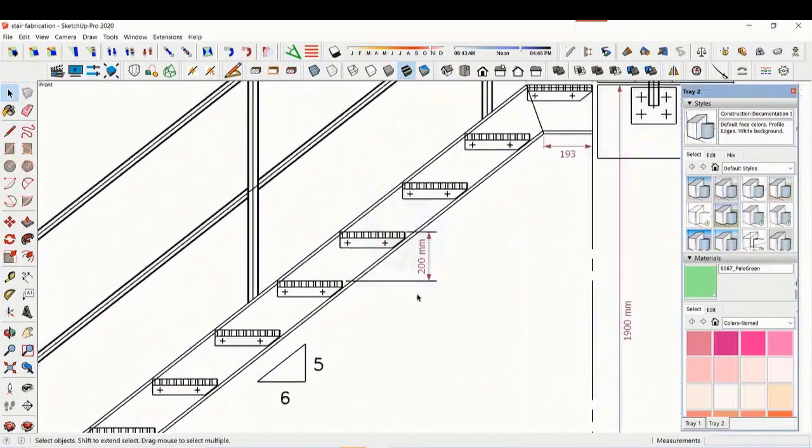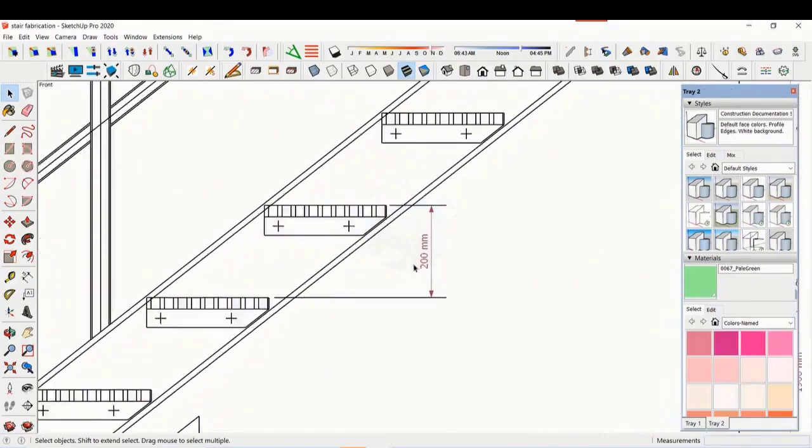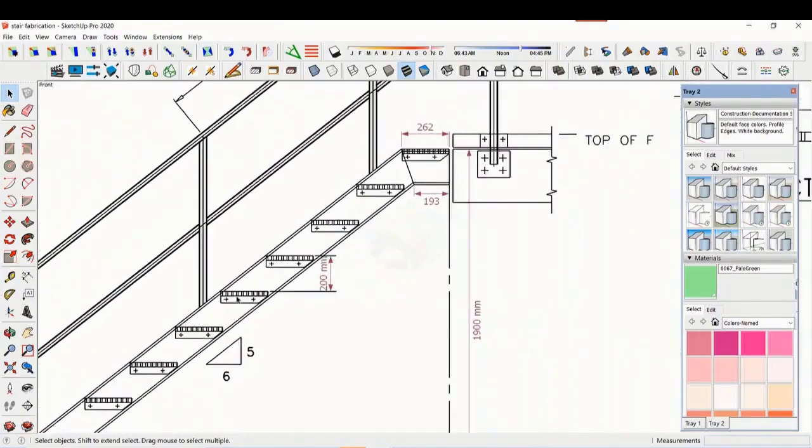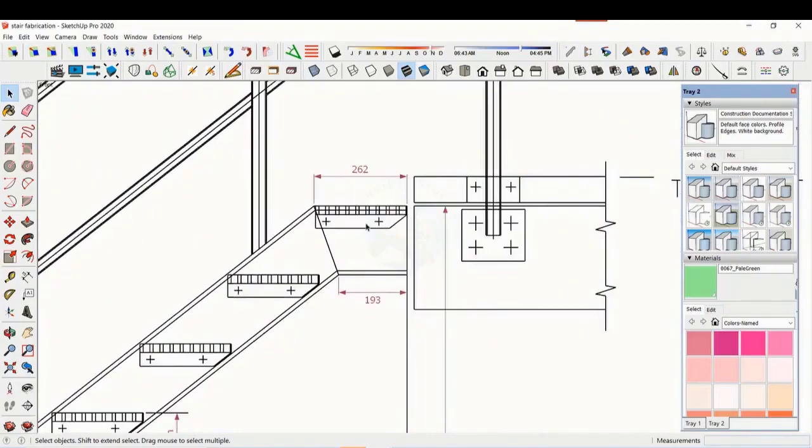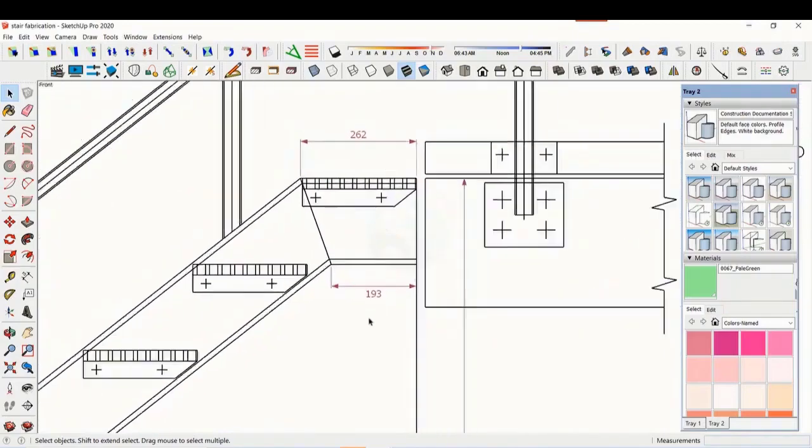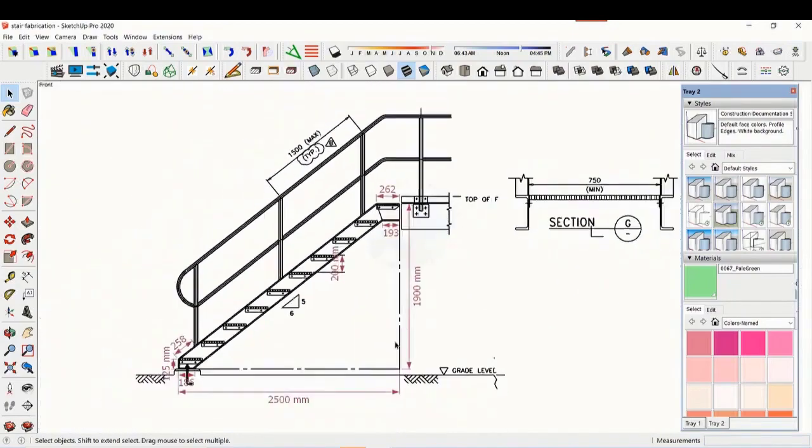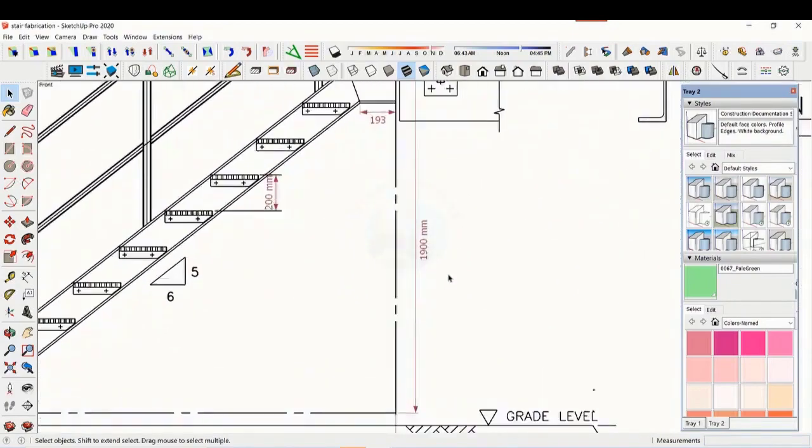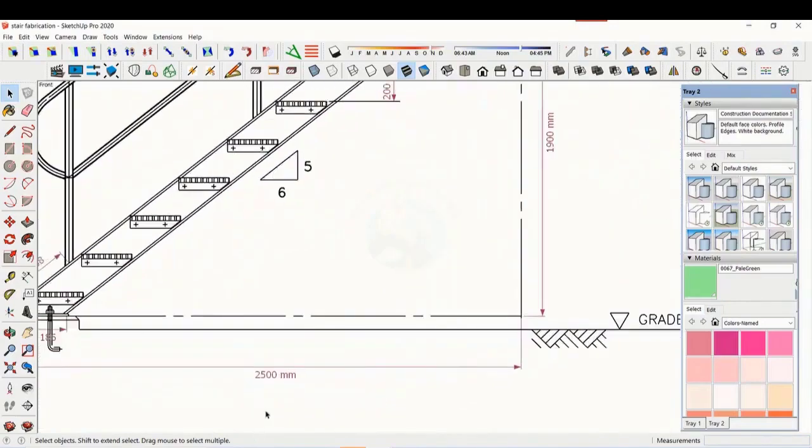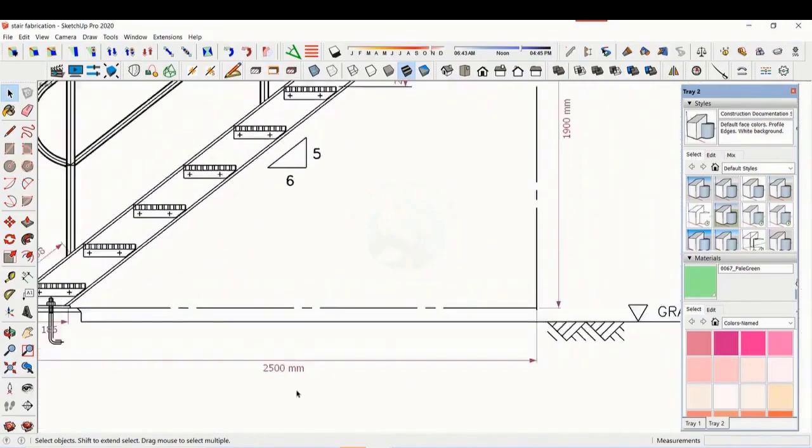The basic structure is made from ISMC 200. The height of the staircase is 1900 millimeters and the length is 2500 millimeters. The width of the staircase is 750 millimeters.